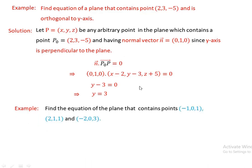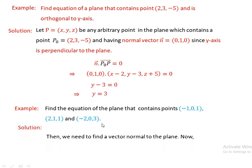Example 3: Find the equation of a plane that contains the three points P(−1, 0, 1), Q(2, 1, 1), and R(−2, 0, 3). We label P = (−1, 0, 1) as P, Q = (2, 1, 1) as Q, and R = (−2, 0, 3) as R. We will find two vectors in the plane and use their cross product to determine the normal vector.